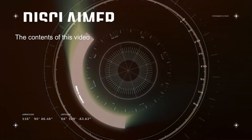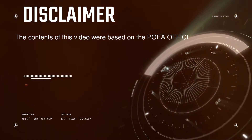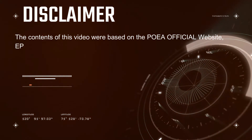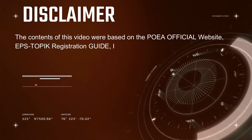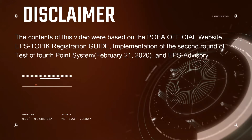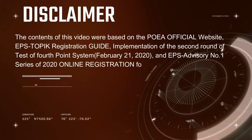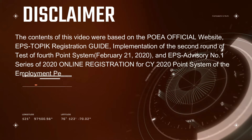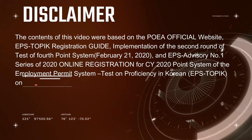The contents of this video were based on the POEA official website, EPS TOPIK Registration Guide, Implementation of the Second Round of Test of Fourth Point System on February 21st, 2020, and EPS Advisory Number One, Series of 2020, Online Registration for CY 2020 Point System of the Employment Permit System Test on Proficiency in Korean EPS TOPIK, on January 14, 2020.